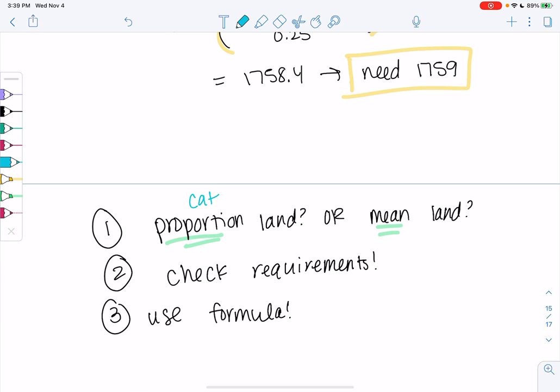Proportions are for categories. You'll often see percents, and means are for numerical data. But honestly, you'll see the keywords. And that's chapter eight.